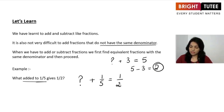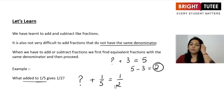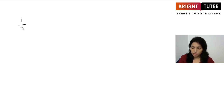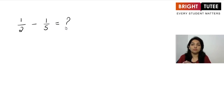First, which fraction is bigger - 1 over 5 or 1 over 2? When comparing fractions with the same numerator but different denominators, the one with the smaller denominator is bigger. Since 2 is smaller than 5, 1 over 2 is the bigger fraction. So we work out 1 over 2 minus 1 over 5 to find the number that needs to be added to 1 over 5 to get 1 over 2.